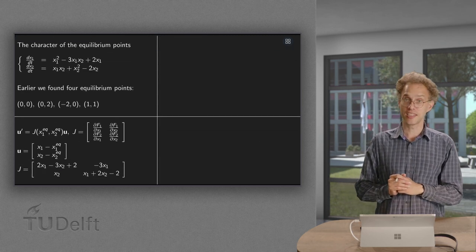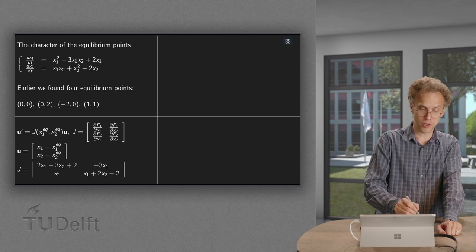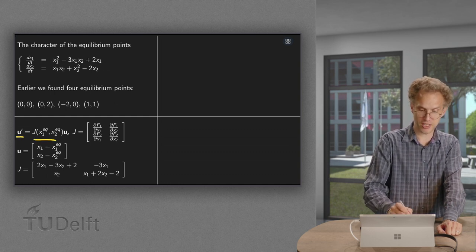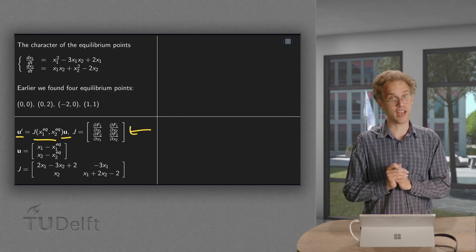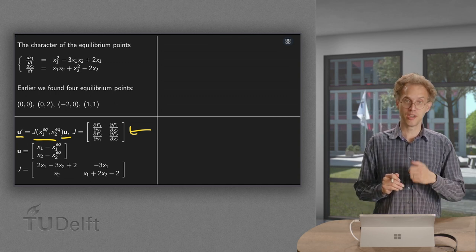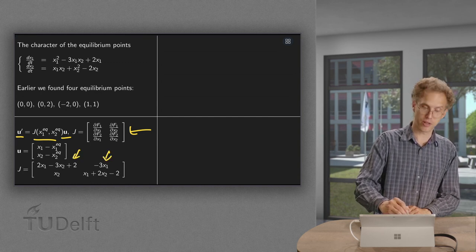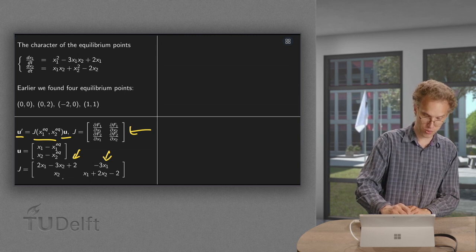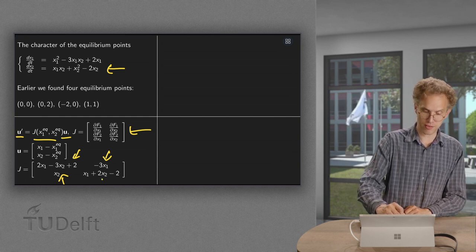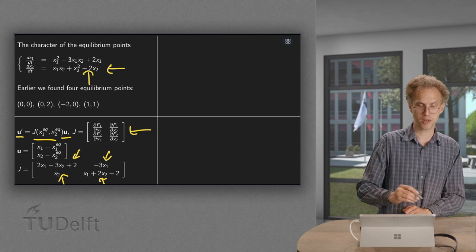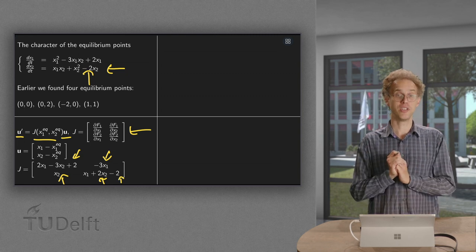Now we take a look at their character. For that we need the Jacobi matrix. So we want to rewrite our system as U' equals J times U, and J is the matrix containing the partial derivatives of F1 and F2. So we compute ∂F1/∂x1, ∂F1/∂x2, ∂F2/∂x1, and ∂F2/∂x2, which gives us an x2 and x1 plus 2x2 minus 2. So there we have the Jacobi matrix.